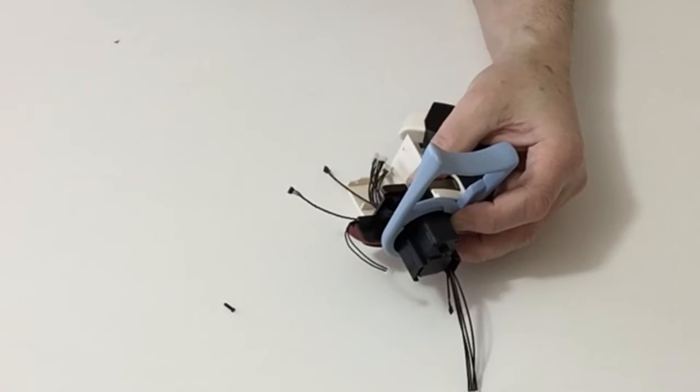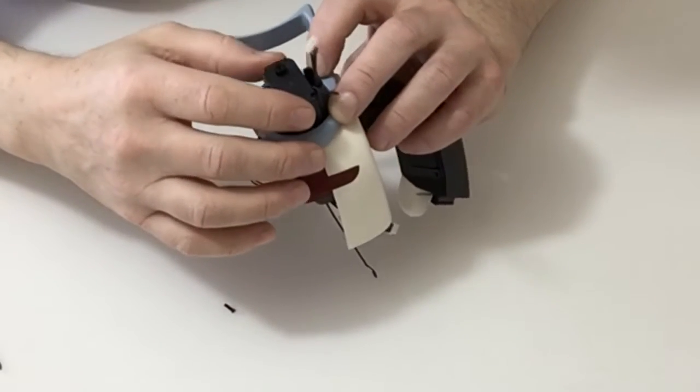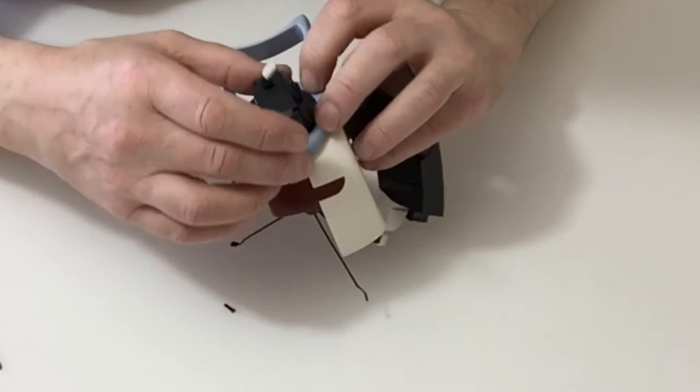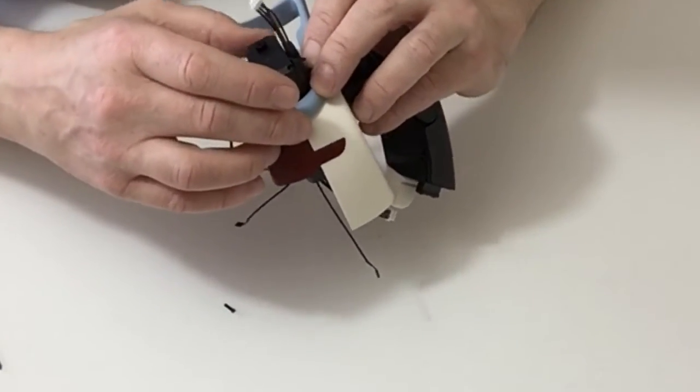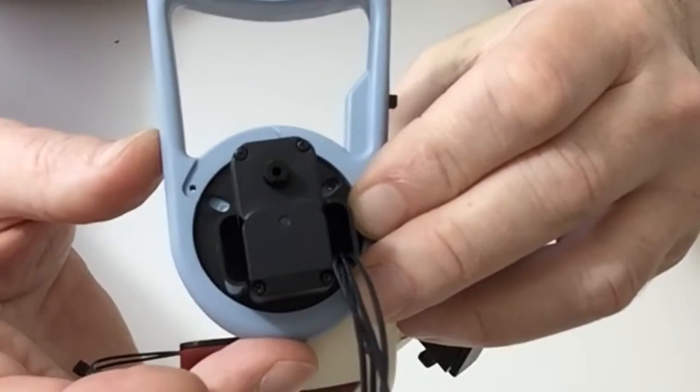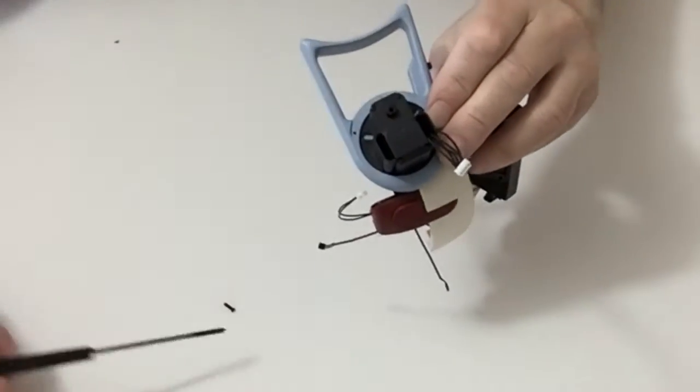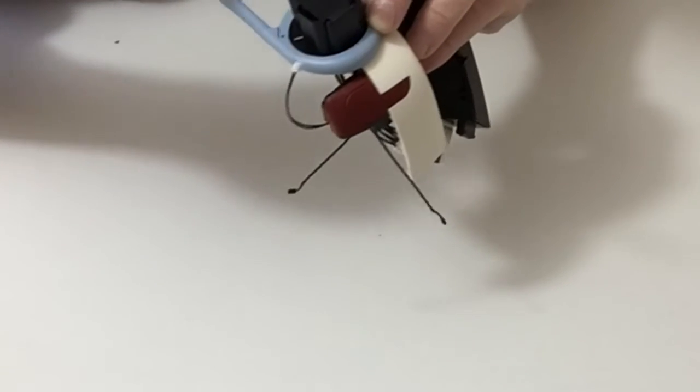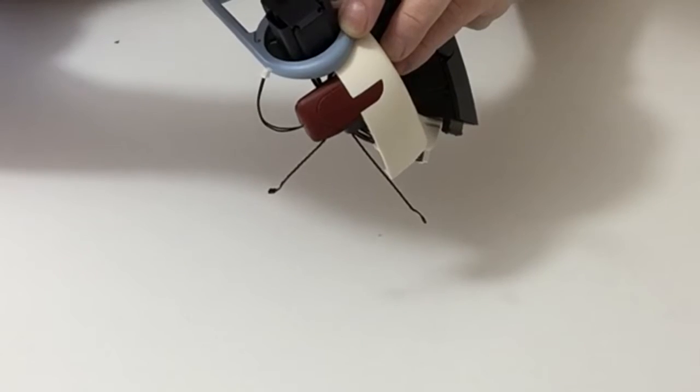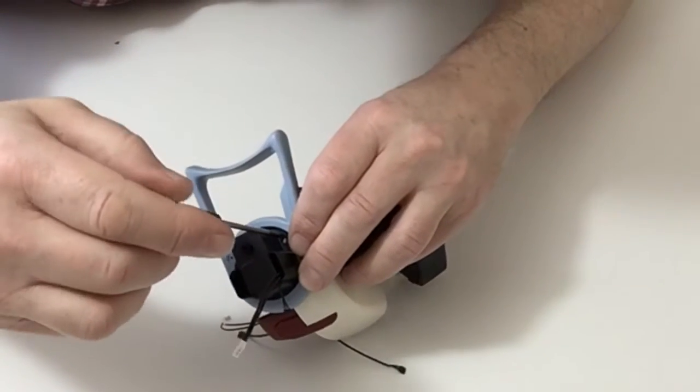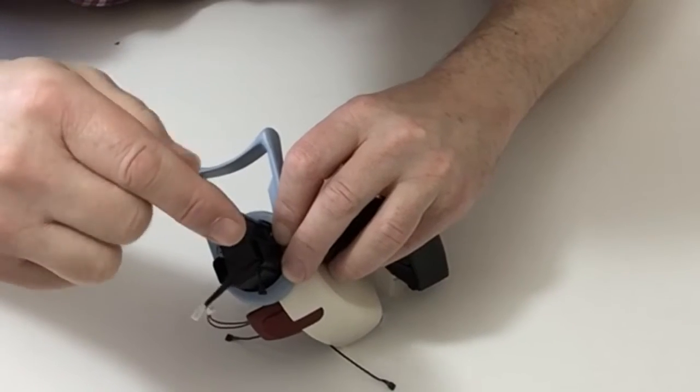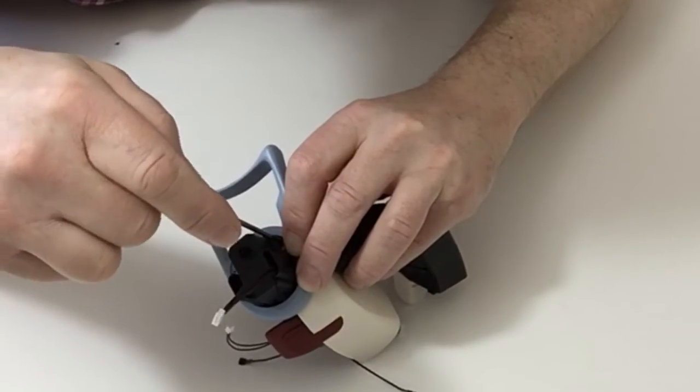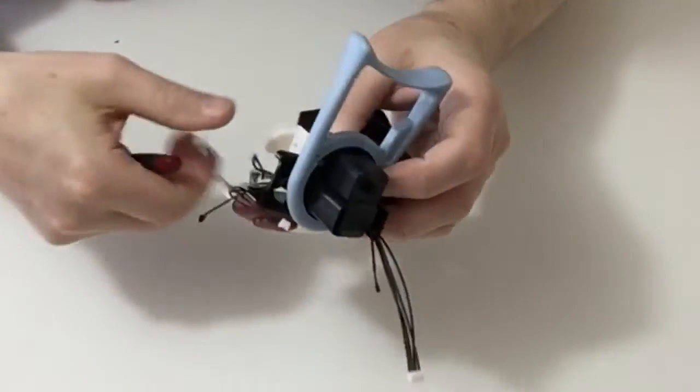Now once you've done that and you've got the scarf sitting on there, we need to then secure that. So move the head unit so that we get the holes through the top lining up. Now it's quite difficult to see. Then take one of the 8mm countersunk screws, passing that down inside and then carefully secure that. Once again, do not over tighten.